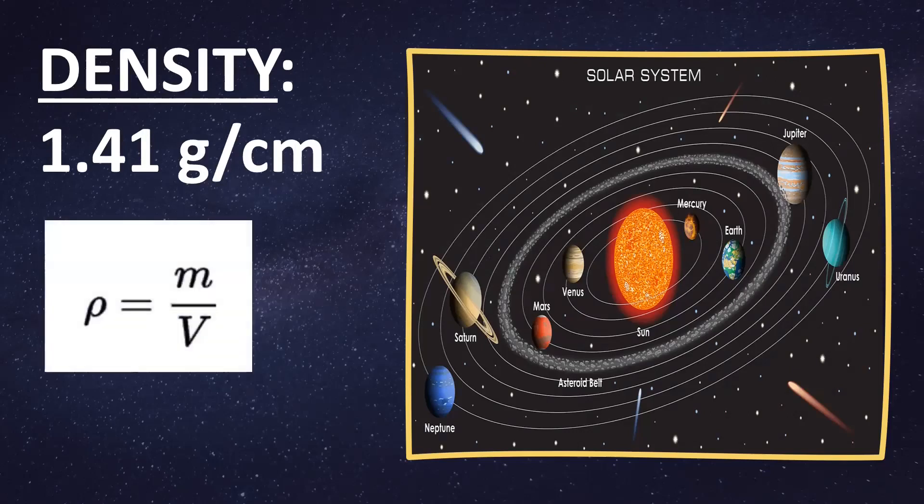The density of the sun is 1.41 grams per cubic centimeter. To get the density, you divide the mass by the volume.